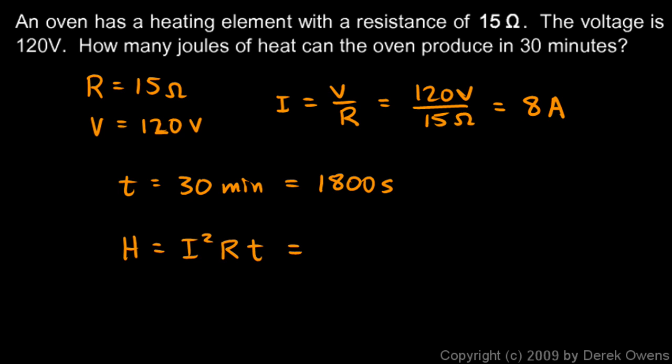We know I is 8 amps, so that's 8 amps squared. We know the resistance is 15 ohms, and we know the time, we'll put in the time in seconds: 1,800 seconds. We just pull out the calculator and do the math, and it comes out to 1,728,000 joules. And that sounds like an awfully high number - just remember that one joule is a pretty small amount of energy.